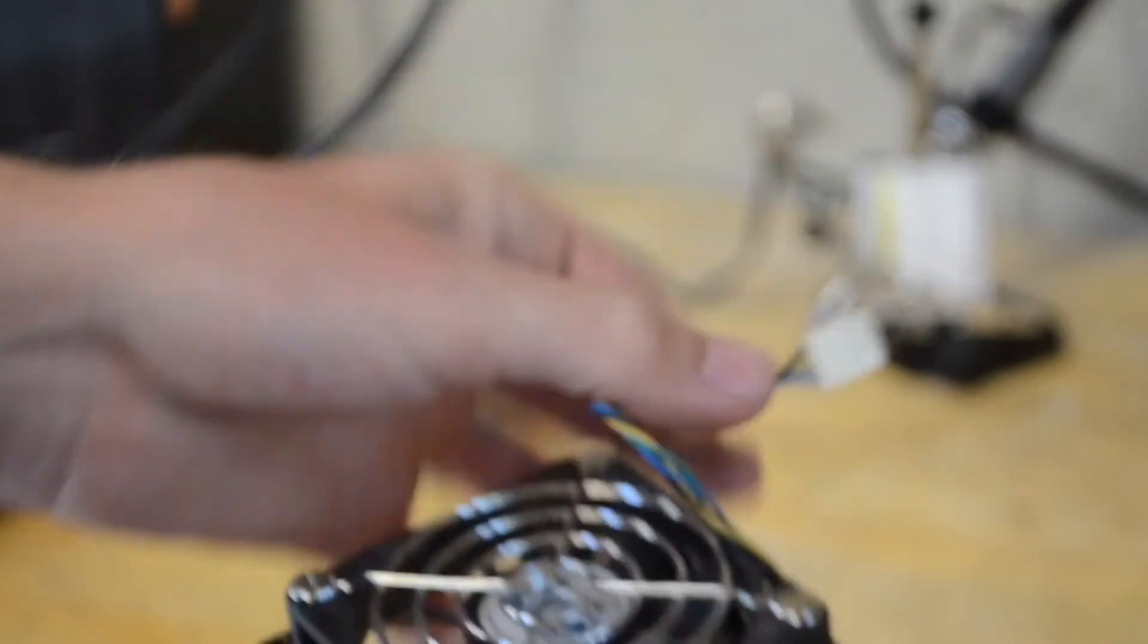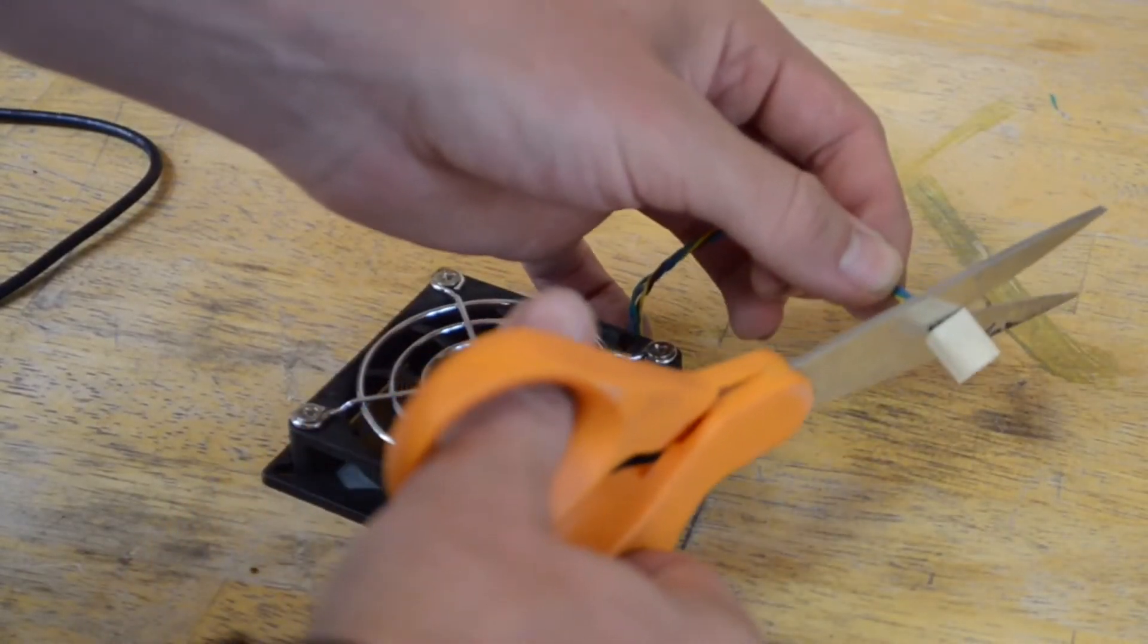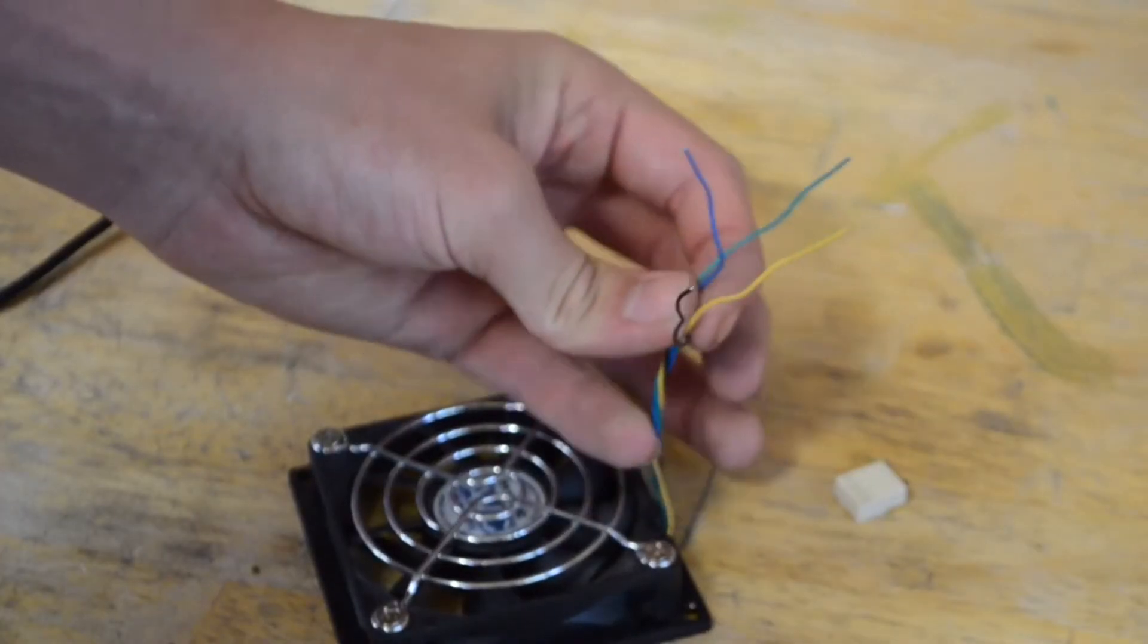Now let's take the fan. Let's cut this terminal bridge off and strip these wires.